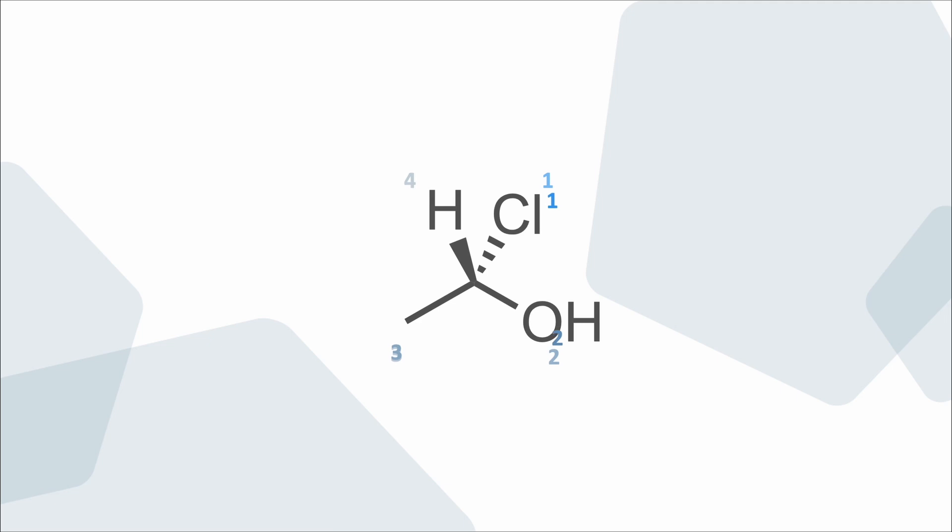If the substituent with the lowest priority points towards us, we have to rethink. Either we imagine what the molecule would look like if we look from it from behind, or we just switch the way we assigned R and S, meaning that the clockwise alignment now means S instead of R, and vice versa.